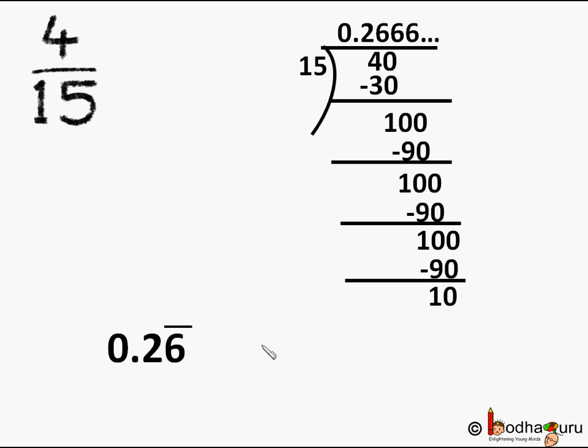But we got non-terminating recurring decimals from rational numbers like 15 by 7, 4 by 15, etc. Which means non-terminating recurring decimals can be represented as a rational number. Let us try the reverse way: decimal to fraction.